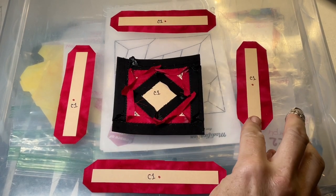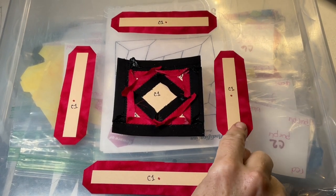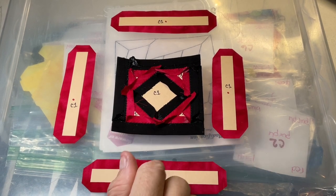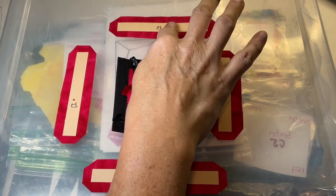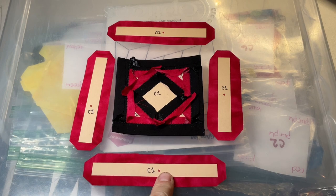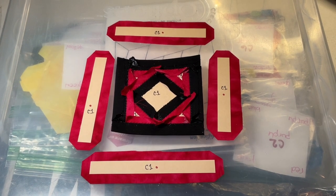The next thing to do would be to start the same process for the outer border. And I'm not going to demonstrate each piece, but we're going to do this one, this one, this one, and then finally this one, in the same way we did the inner border.